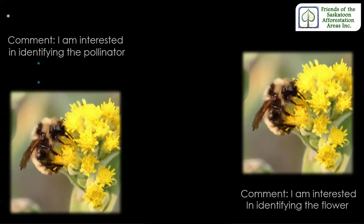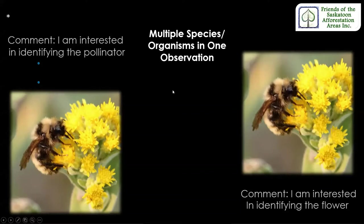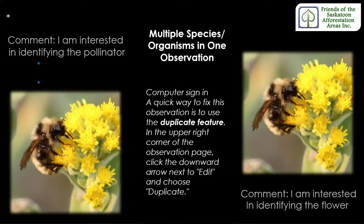Do you have a photograph with more than one organism and you want to know both of them? That's easy — just duplicate your observation. In the notes section of the first observation, just comment that you're interested in identifying the pollinator. And then on the duplicate observation, just mention that you're interested in identifying the flower, and the people will come along and know what you're aiming for.